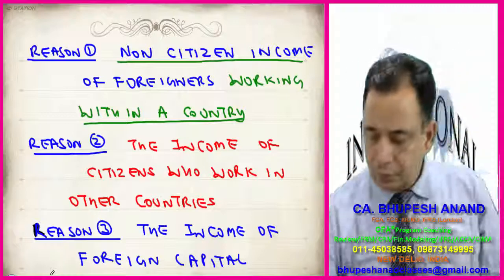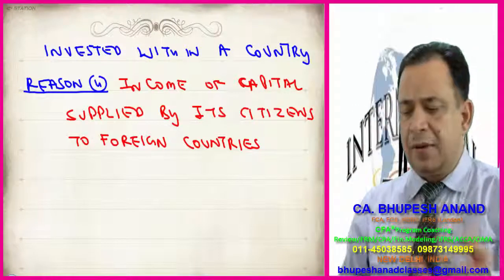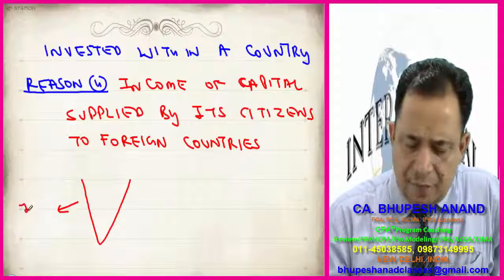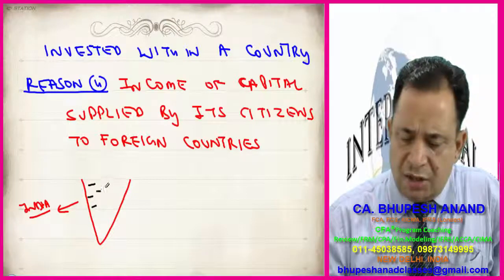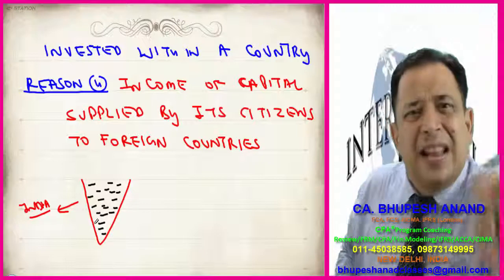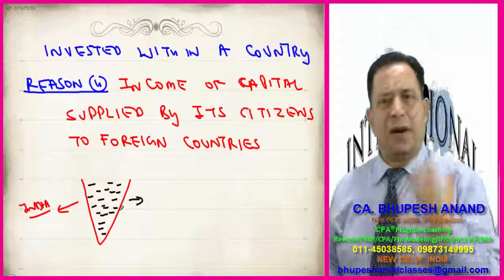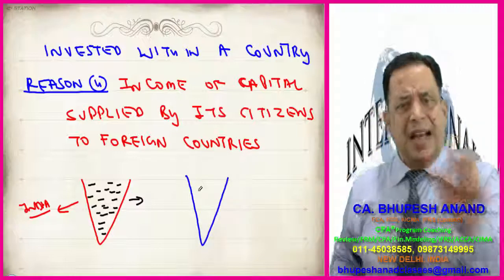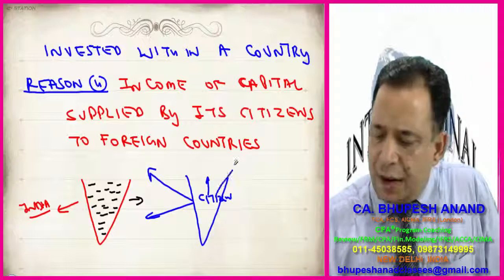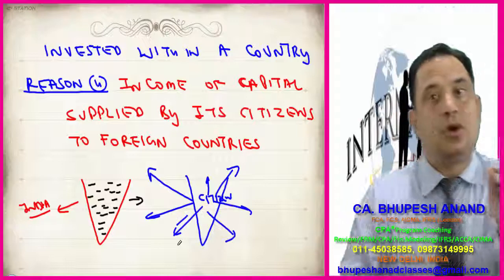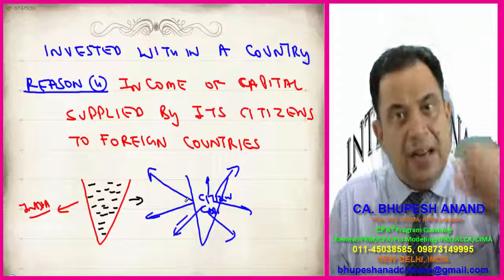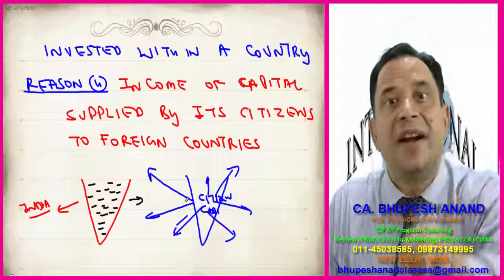The income of foreign capital invested within a country, and the income of capital supplied by citizens to foreign countries. In GDP we are concerned only with India — whatever goods or services produced within India, whether by citizens or foreigners, we are not concerned — we are mainly concerned with the borders of India. In GNP, I am mainly concerned with the citizens of India, whether they are working in India or anywhere outside — and the capital of India wherever it is invested. If it is Indian capital and Indian citizens, it will be included in GNP of India.